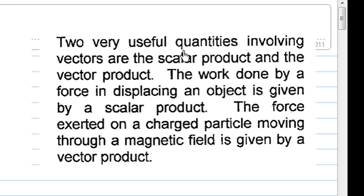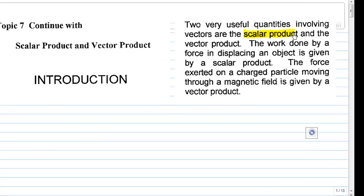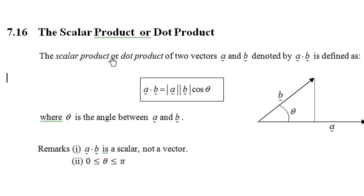What is a scalar product of vectors? The scalar product or dot product of two vectors a and b, denoted by a dot b, is defined as a dot b equal to the magnitude of a times the magnitude of b cosine theta, where theta is the angle between a and b.